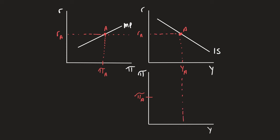We now have a combination of output and the inflation rate. So we have a single point A here.